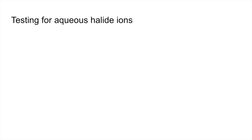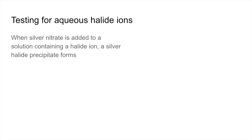The final topic is the test for aqueous halide ions. When silver nitrate is added to a solution containing halide ions — chloride, bromide, or iodide — you get a silver halide precipitate. These silver halide precipitates have different colours and different solubilities in aqueous ammonia.